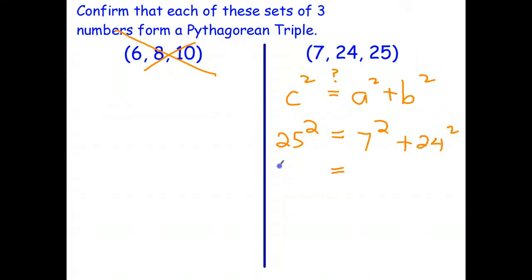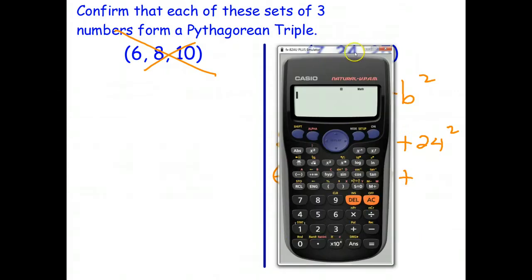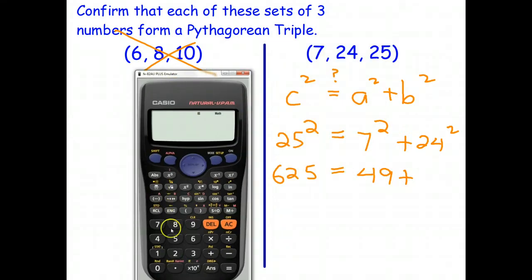So 25 squared I know is 625. 7 squared I know is 49. 24 squared I should know, but I can't remember. So I'll go ahead and use the calculator on that one. 24 squared, 576.